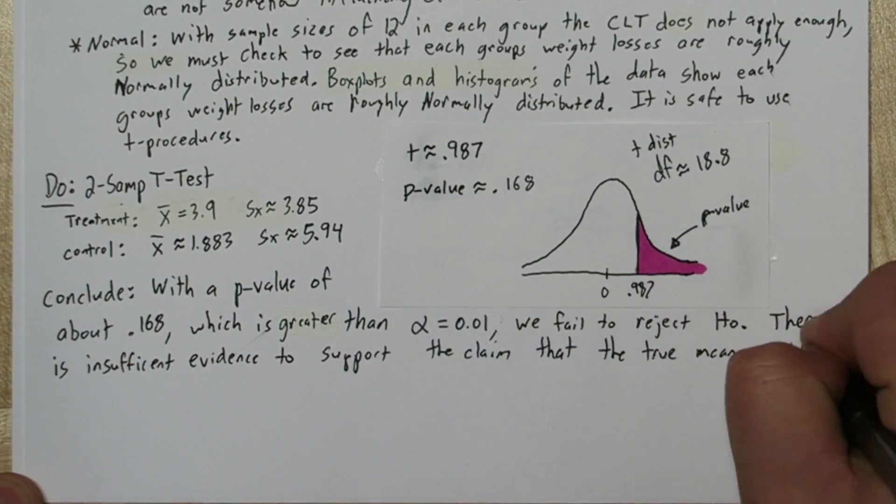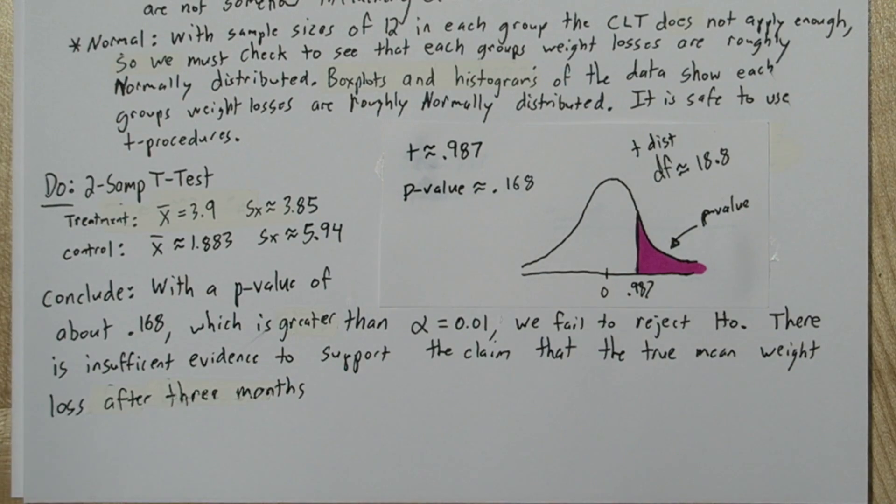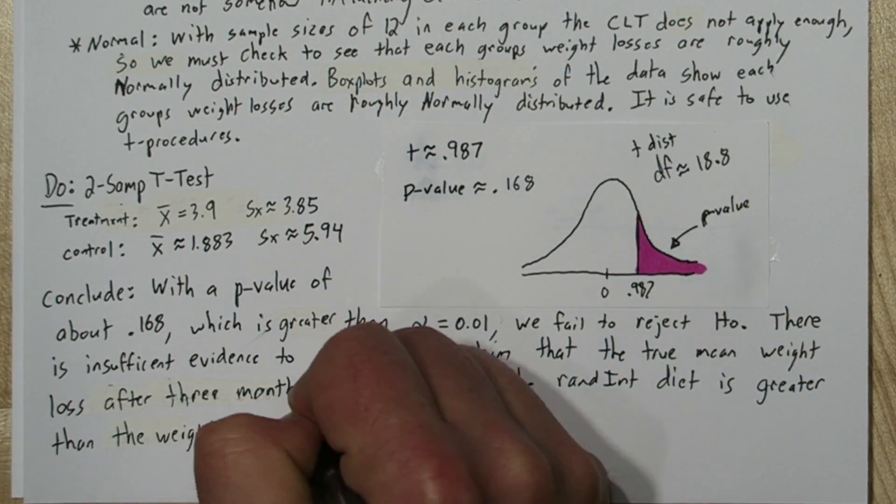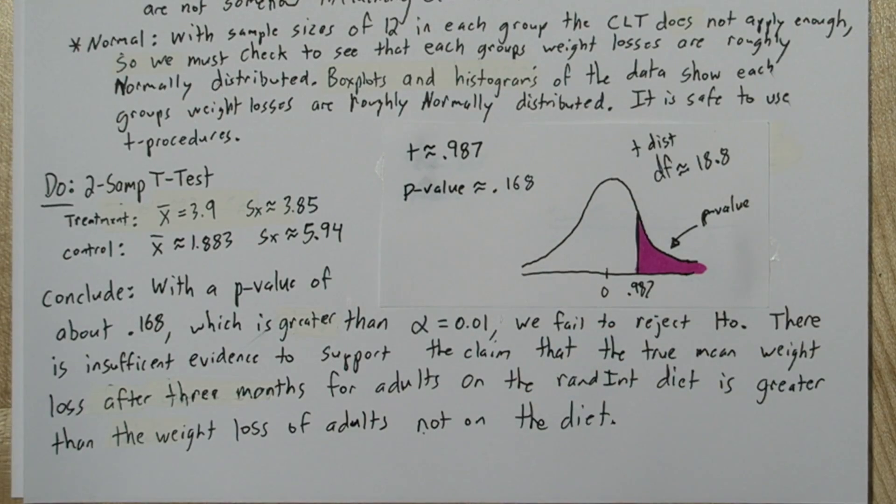There is insufficient evidence to support the claim that the true mean weight loss after three months for adults on the Randon diet is greater than the weight loss of adults not on the diet.